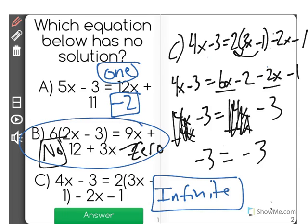So in this case, B is the one that has no solutions. A has one solution and C has infinite solutions.